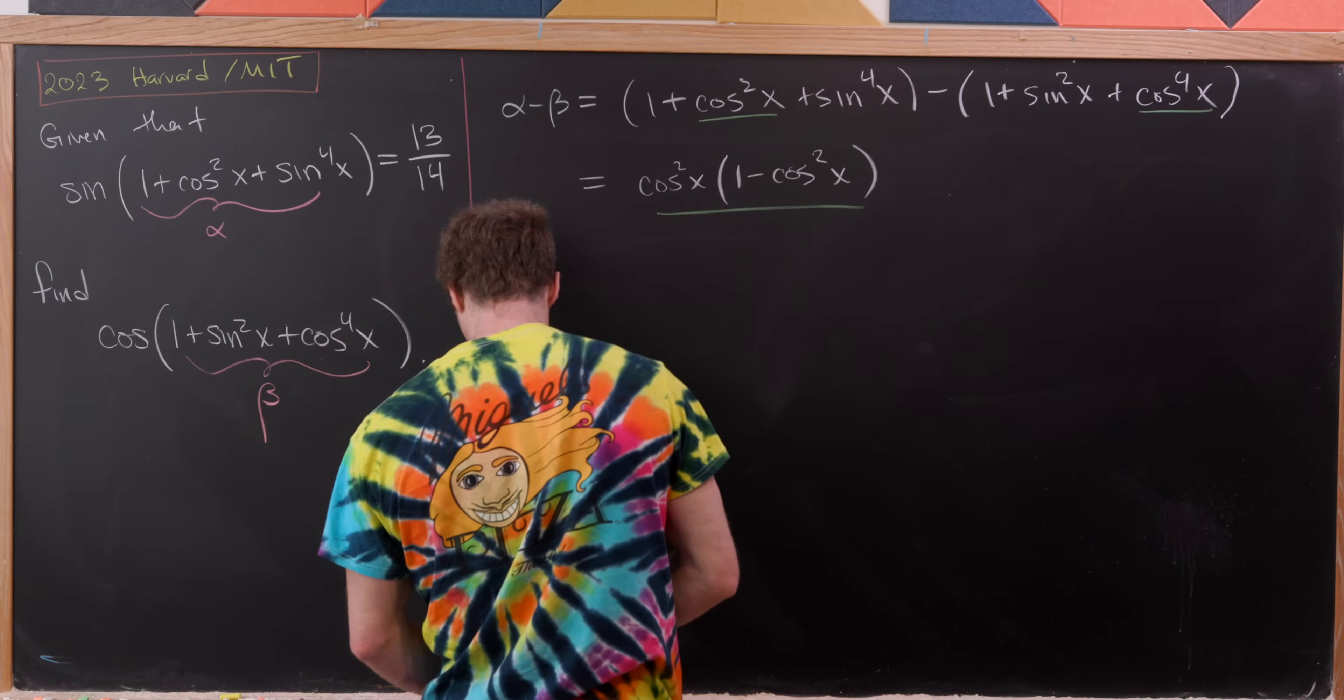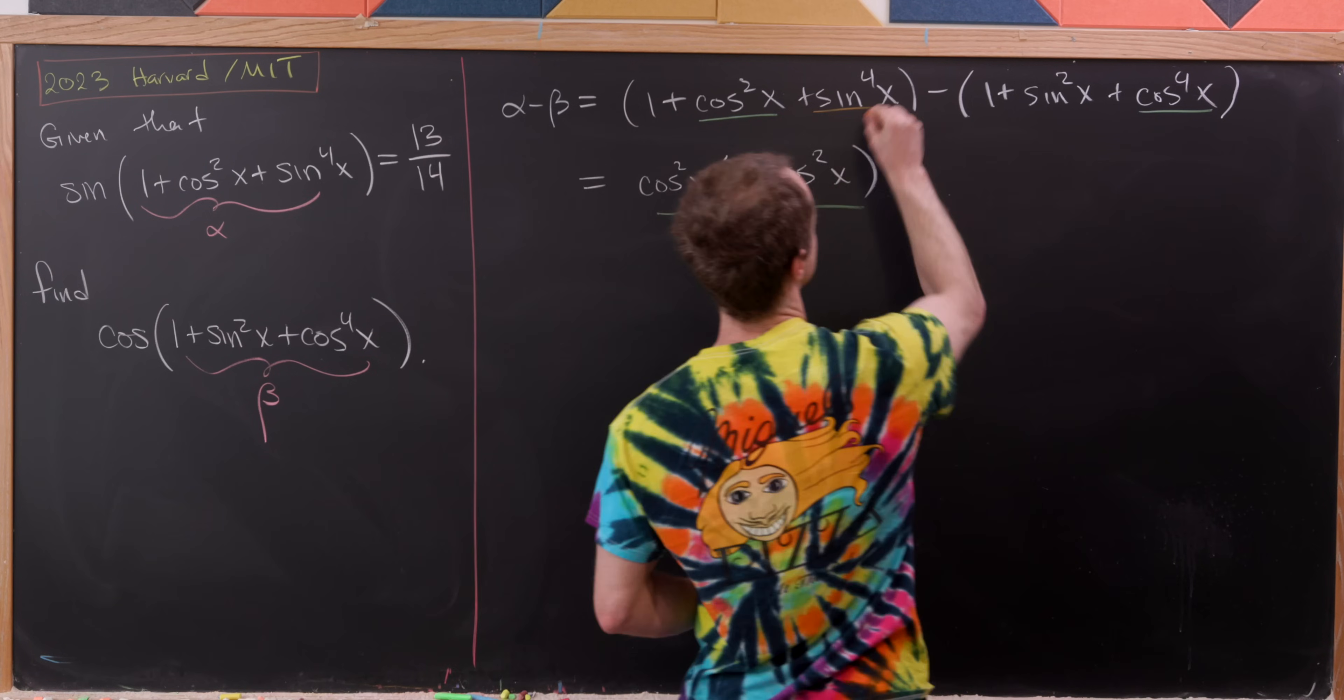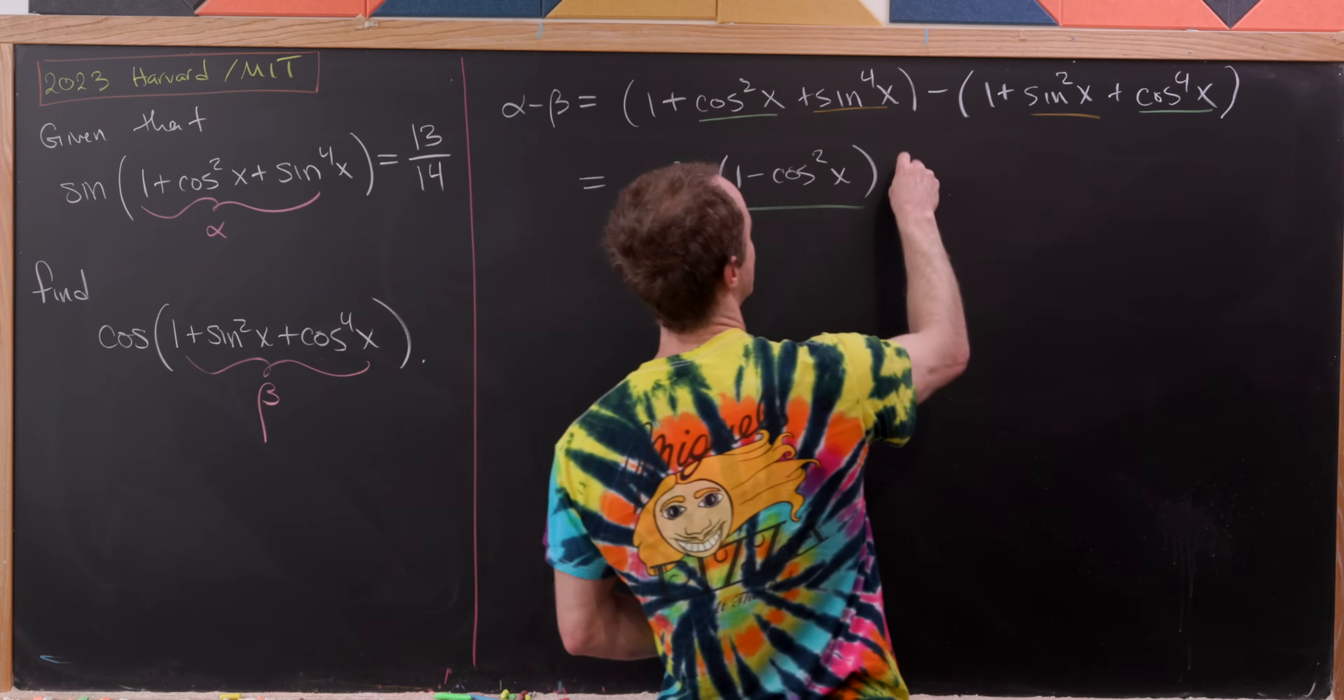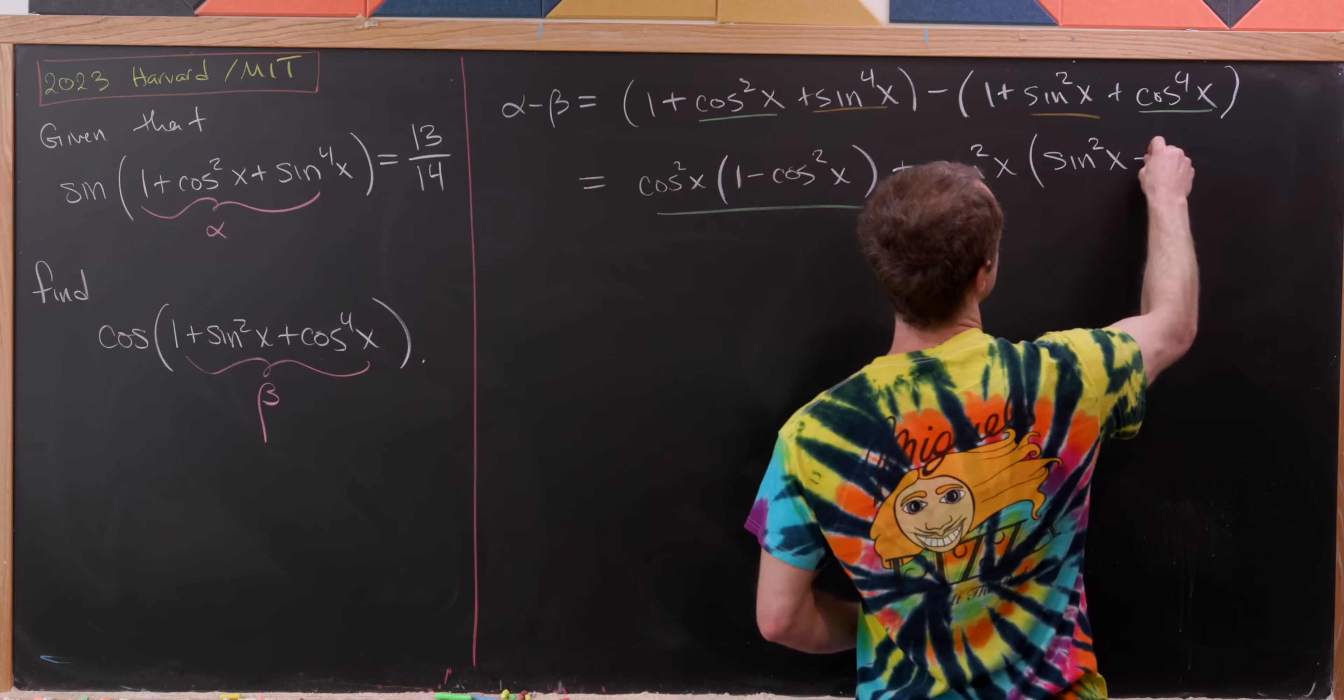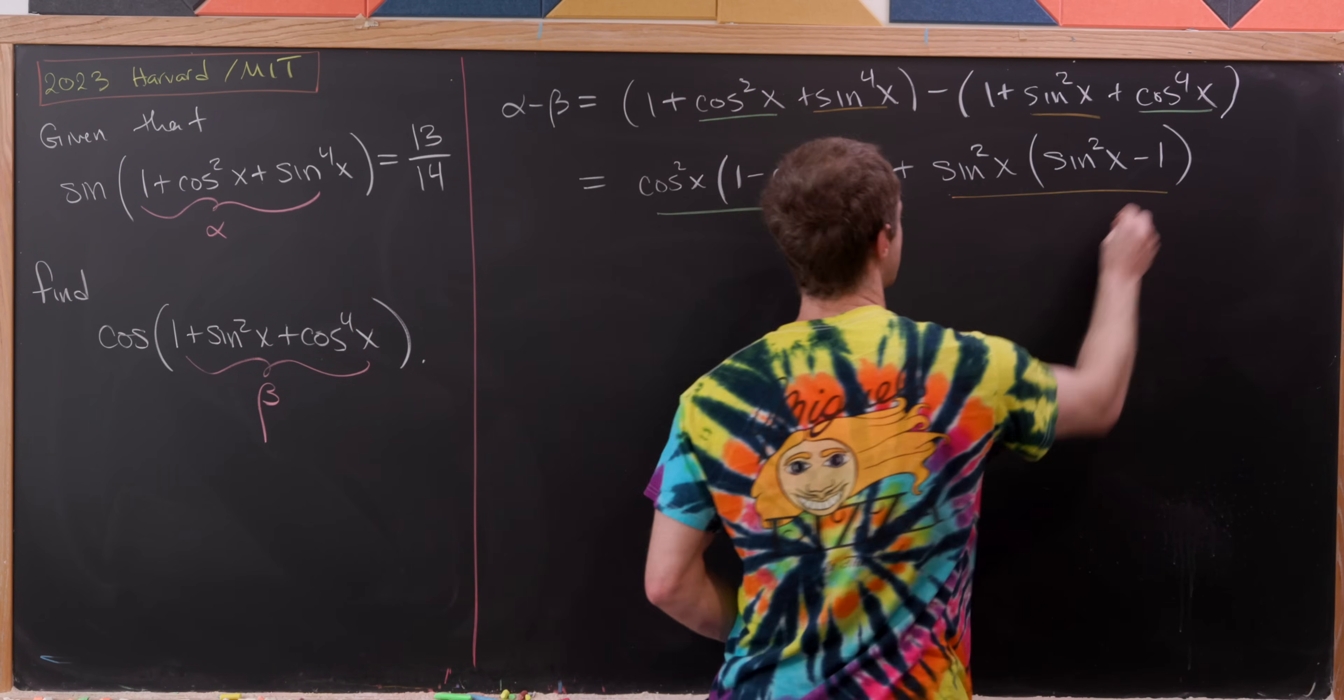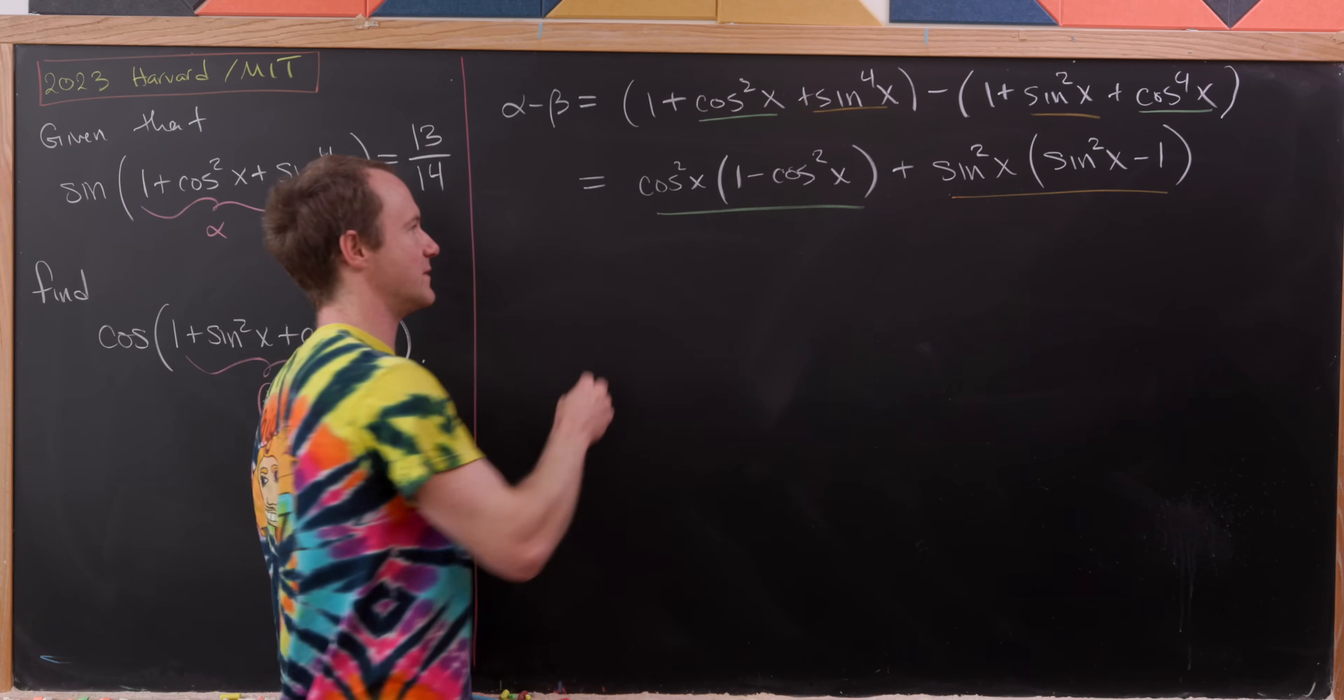And then what about these other terms, which maybe I'll underline in orange, the sin⁴x terms? Let's observe that's going to be plus sin²x factored out, and then we'll have (sin²x - 1). Okay, nice. But now we can use the Pythagorean trig identity to simplify this quite a bit.